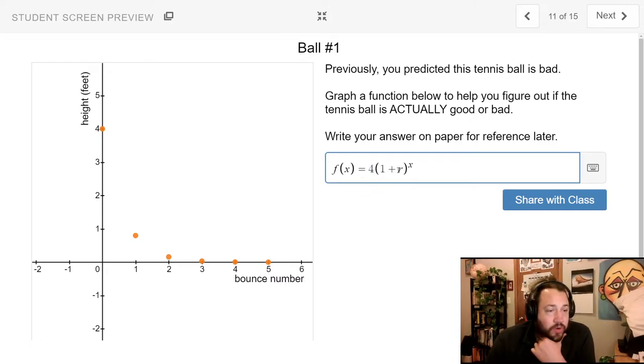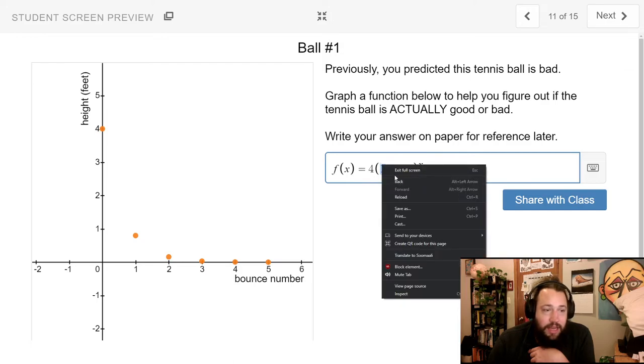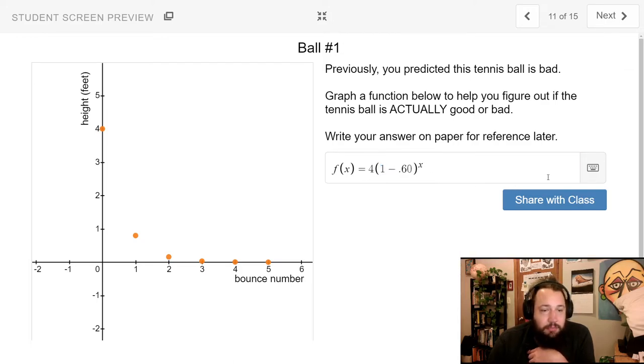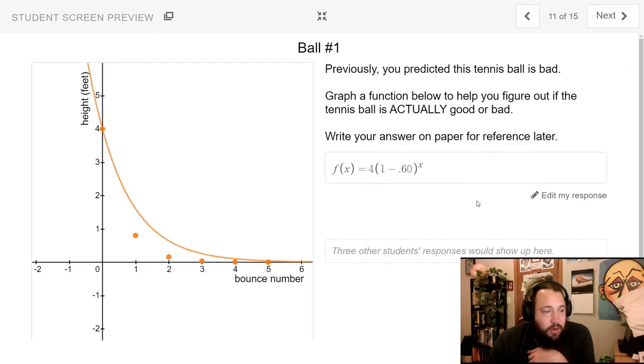I also know that I need to give a percent change for my r. So, since this is decreasing, this r needs to be a negative percent. So, I'm going to go ahead and change all this out to be negative. Let's just go with an easy 60% like that. So, here I have negative 60%. And I can click share with class, and it gives me my graph right here.